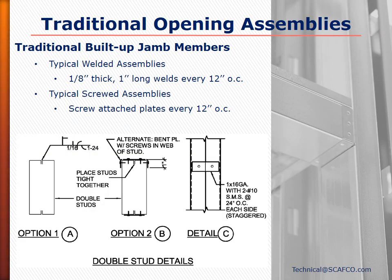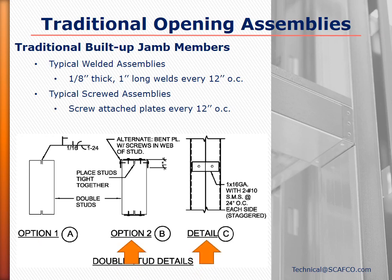Many typical variations of this assembly exist, such as back-to-back jam studs capped with track instead of boxed members, configurations that do not have jack studs, nested headers which include a track section with a stud nested inside so the flanges are inside and touching the legs of the track, nested sill assemblies, boxed beam sill assemblies for exterior loading, and many different attachment methods for the critical header-to-jam connection.